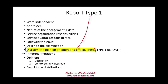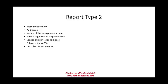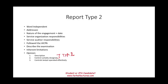Type 2 looks mostly very similar to type 1, except you will have three opinions instead of two, and you will not disclaim the opinion on operating effectiveness because you are testing the controls. The type 2 report includes: the word 'independent,' addressee, nature of engagement, date, service organization responsibilities, service auditor responsibilities, AICPA standards followed, description of the examination, inherent limitations, and opinions on description, suitability of design (from type 1), plus a third opinion on whether controls tested operated effectively. They also describe how they tested the controls — such as using sampling — and restrict the distribution.